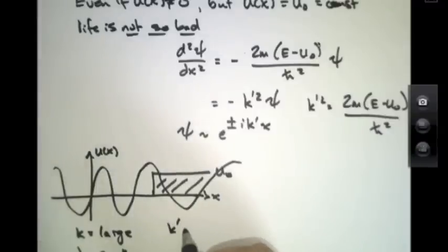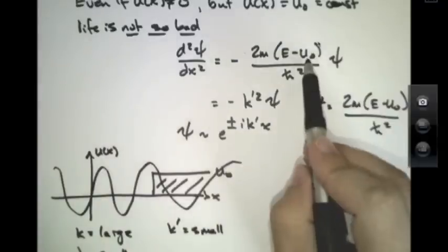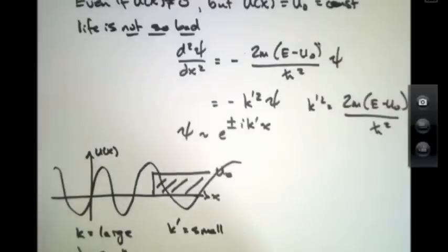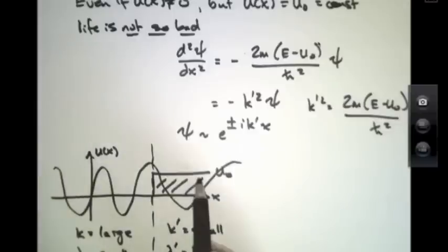Here, k prime is small, because now this potential energy subtracts off from the total energy, and therefore the wavelength in this region is large. All of this happens right there at this boundary, at the place where the potential energy changes from being zero up to u naught.